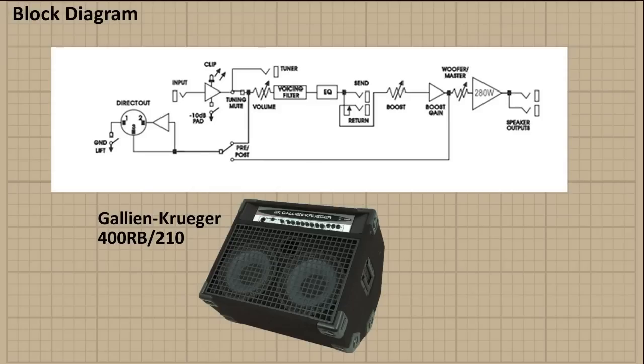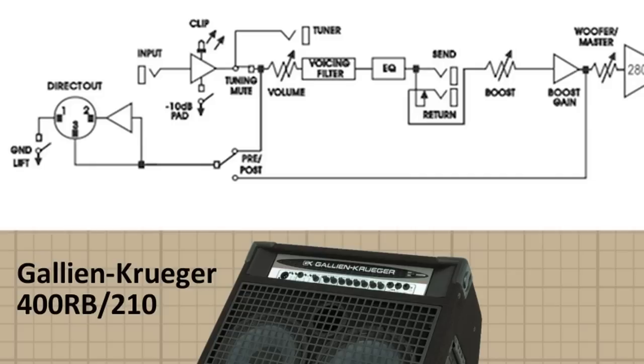Let's look at the next block diagram. This one's much more simple. Maybe I should have started with this one. But this is a block diagram of a bass amplifier, a Galleon-Kruger 400RB-210. So we take a look at this. We'll notice differences between the schematic. There are not values assigned to every component.